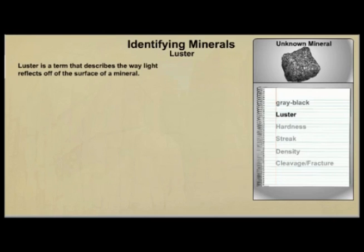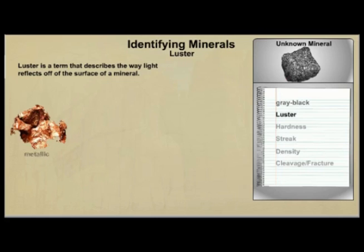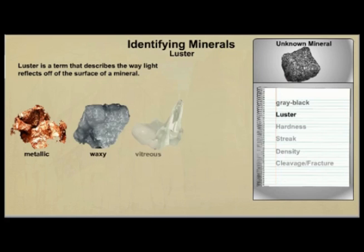Luster is a term that describes the way light reflects off the surface of a mineral. Metals are generally shiny — they have what is called a metallic luster. There are many terms used to describe luster. Some of the terms you will use to identify minerals in this lesson include waxy, vitreous, and earthy.